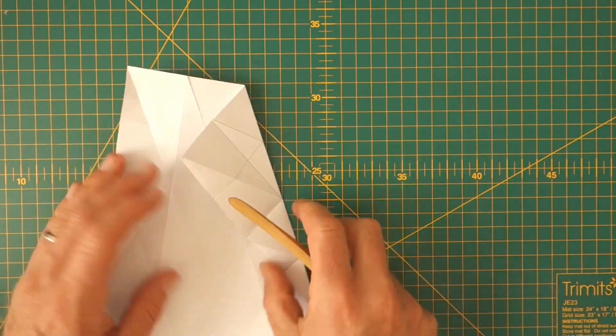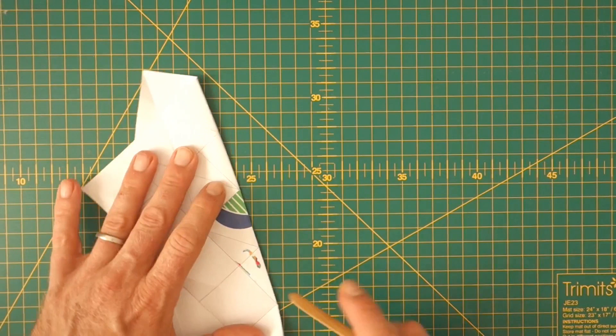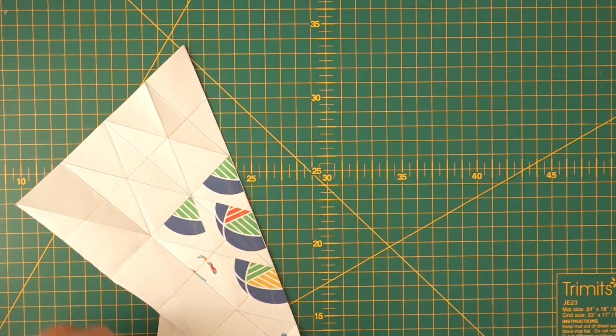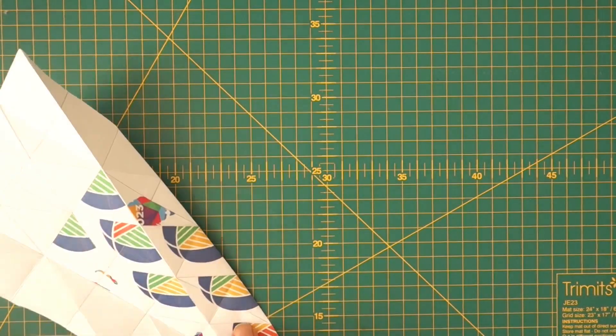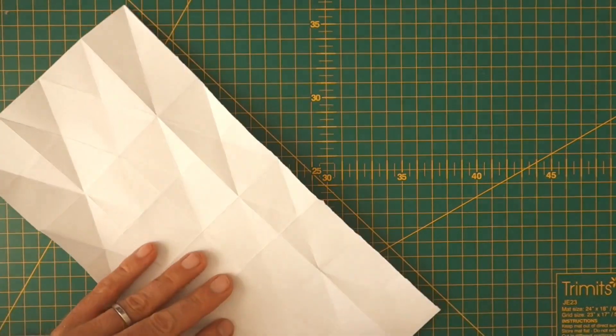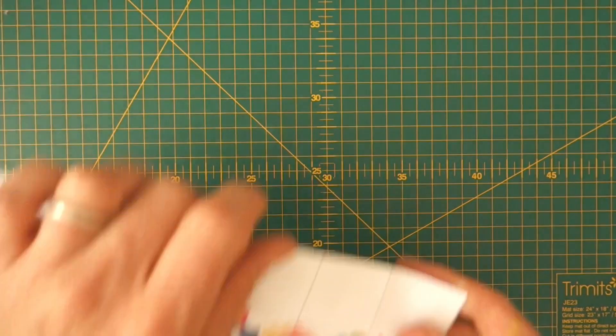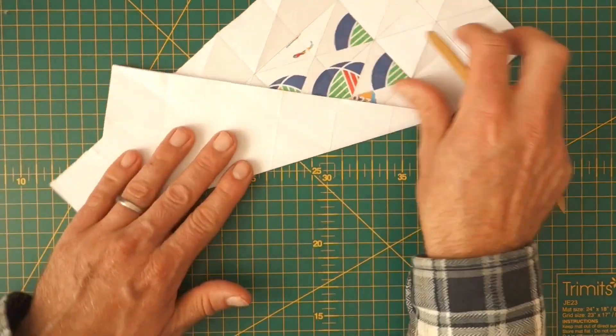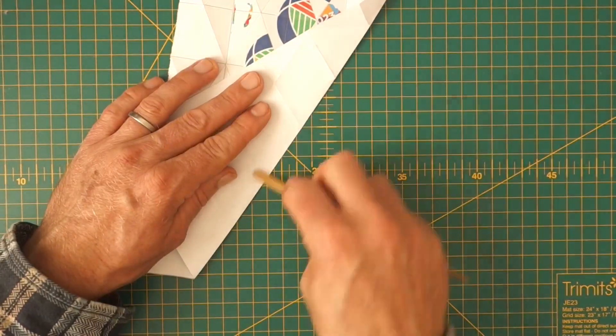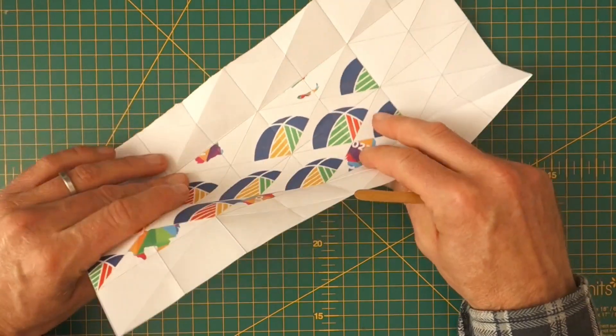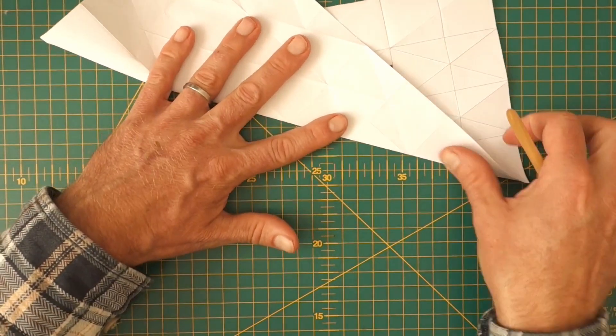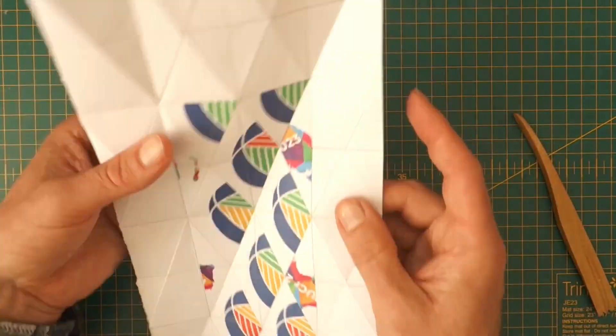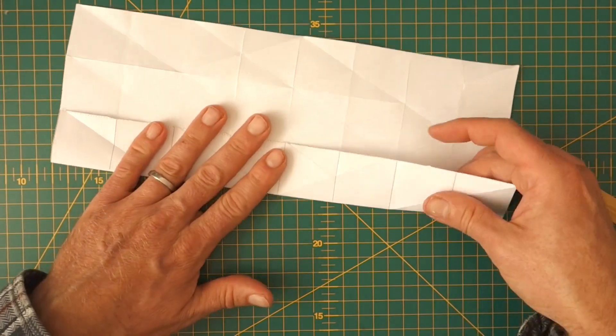Again, it's maybe worth just going over some of these creases again so they go both ways quite easily, especially those diagonal ones. Okay. So now, these bits here need to be folded in.